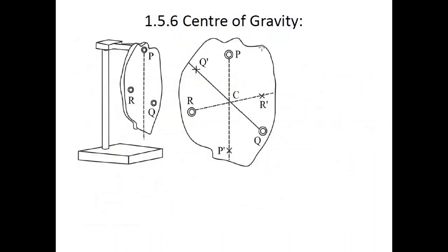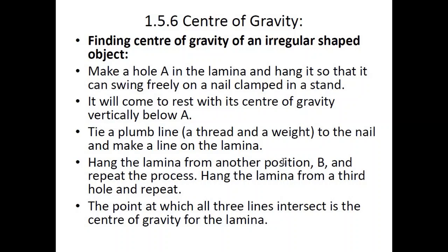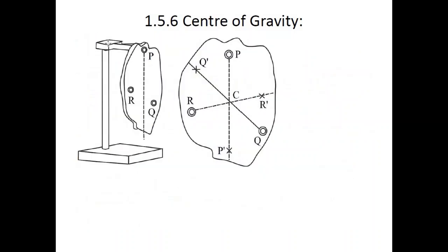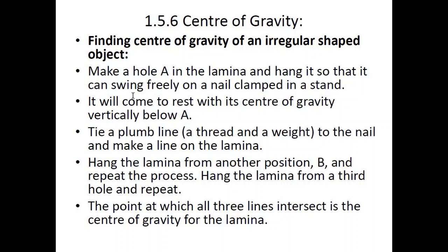To find the center of gravity of an irregular shaped object — for example a piece of cardboard, called a lamina by examiners — simply make a hole in the lamina and hang it from a stand, letting it come to rest. Make sure the hole is big enough that the lamina can swing freely on a nail clamped in a stand. It will come to rest with its center of gravity vertically below the nail. Tie a plumb line — a thread and weight — to the nail and mark a line on the lamina along the thread.